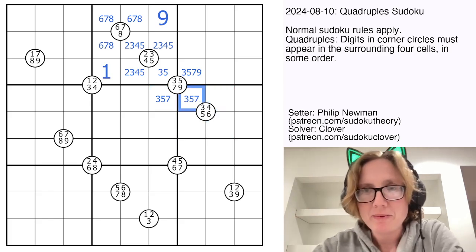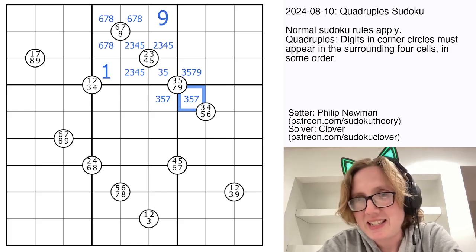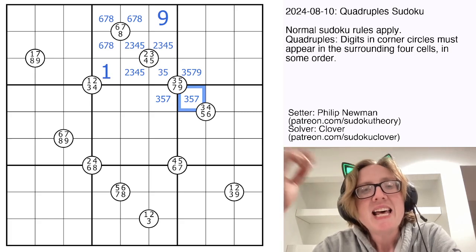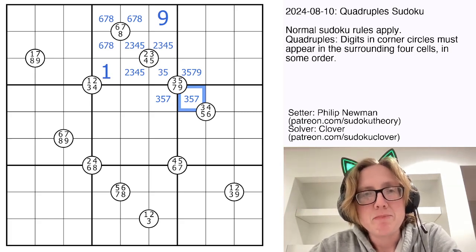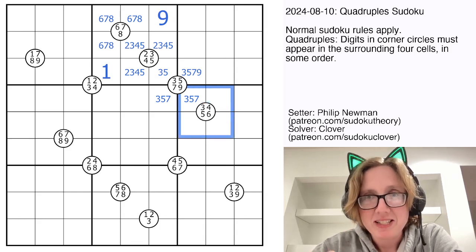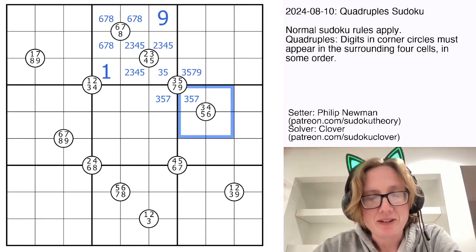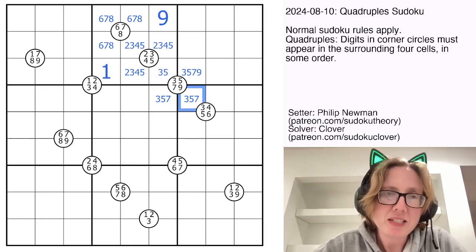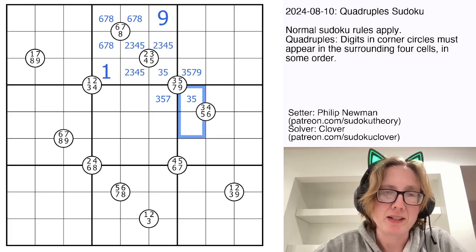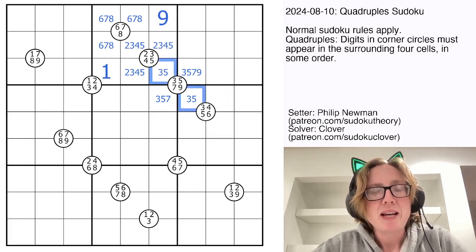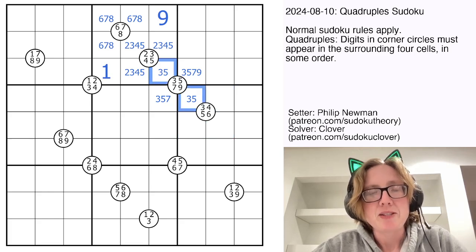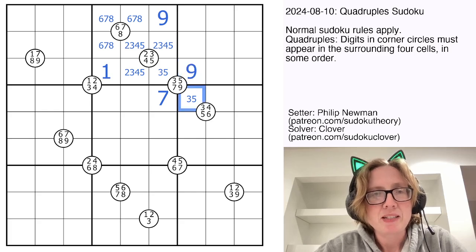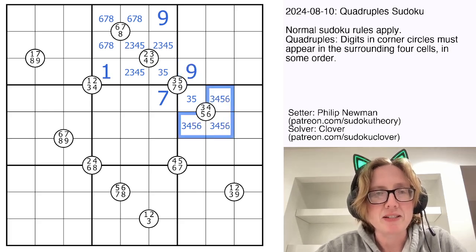There's not generally a rule, by the way, with quadruples that says that those are the only digits that can ever appear around a circle. That said, because in Philip's puzzle in particular, most of the clues have four digits and there are exactly four cells surrounding a circle, generally we can reach that conclusion with this puzzle. So this also can't be a seven because it's in the three, four, five, six circle. So now we have a three, five pair here, and so we also need a seven and a nine, which will go there and there. These will be three, four, five, six in some combination.